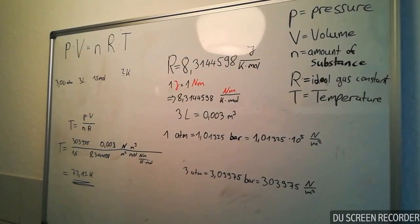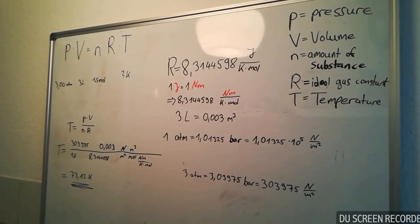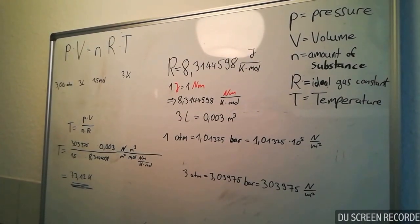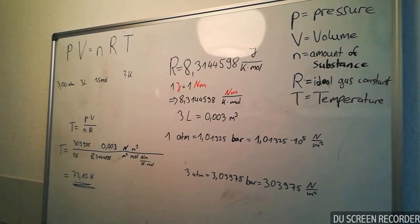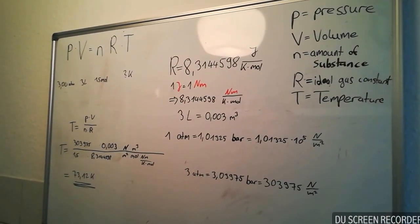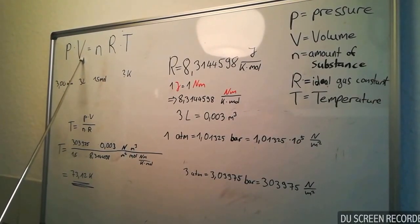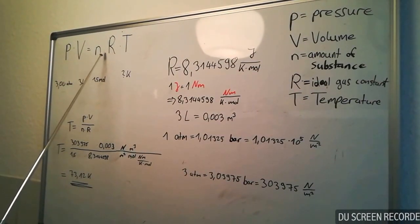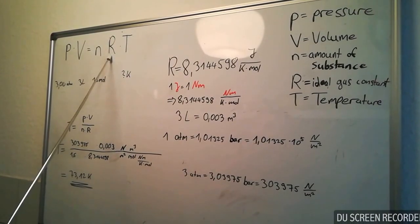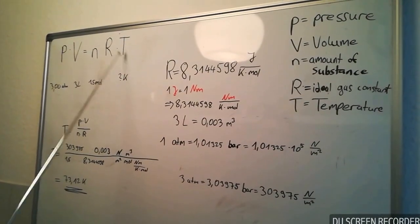Hello and welcome. Today I want to show you how to use the ideal gas law. Therefore, I have prepared some calculations. At first, the formula is: pressure multiplied with the volume is equal to the amount of substance multiplied with the ideal gas constant and the temperature.